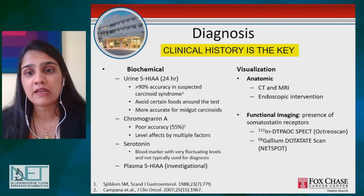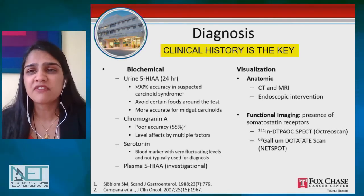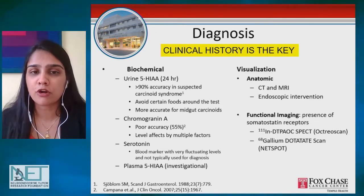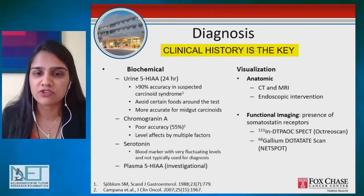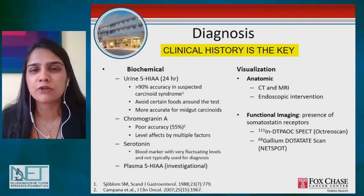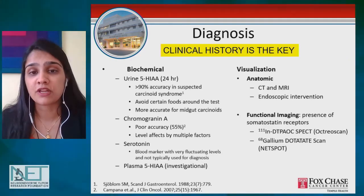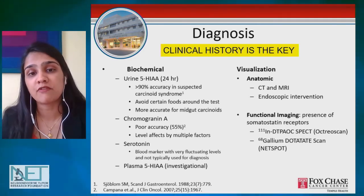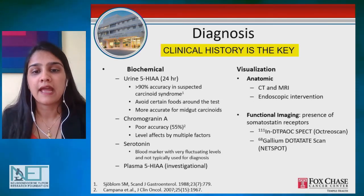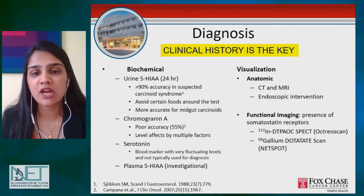We use chromogranin A very widely — primary care physicians, GI, and even oncology use it often — but it's a very inaccurate test. In one study where half the people had carcinoid and the other half were normal, the levels were actually higher in normal people than in carcinoid patients. So it's not a very accurate test and we are slowly trying to decrease its use. We can also check serotonin in blood, but it's not the best screening tool because it's a very fluctuating hormone — platelets, the cells that prevent bleeding, also produce a lot of this hormone, so we typically don't use it for diagnosis.